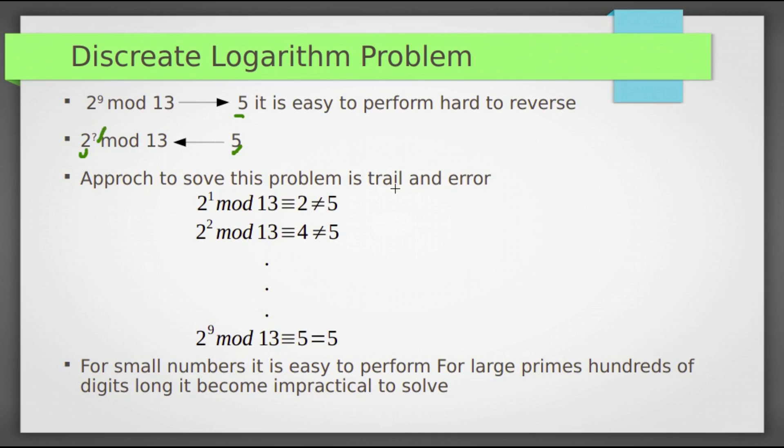Naive approach to solve this problem is trial and error. We have to try with all possible values for this exponent: 2^1 mod 13 ≡ 2, not equal to 5. 2^2 mod 13 ≡ 4, not equal to 5. You have to continue like this, but when this exponent equals 9, 2^9 mod 13 ≡ 5. For smaller numbers it is easy to perform this trial and error method. For larger primes hundreds of digits long, it becomes impractical to solve this discrete log problem.